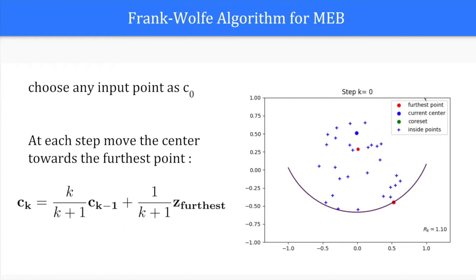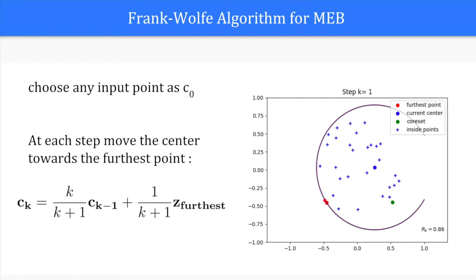So at first the center is here and the furthest point is over there. The new center will be around here. Here the furthest point is to the left and the center moves towards it, around here, then towards the top. We see that the algorithm converges to the minimum enclosing ball.